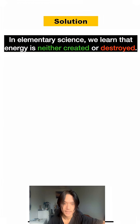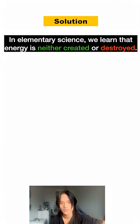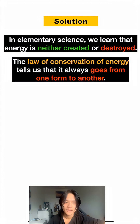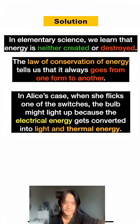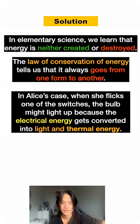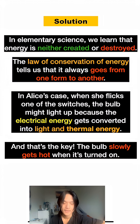In science we learn that energy is neither created nor destroyed. The law of conservation of energy tells us that it goes from one form to another. In Alice's case, when she flicks one of the switches, the bulb might light up because the electrical energy gets converted into light and thermal energy. And that's the key — the bulb slowly gets hot when it's turned on.